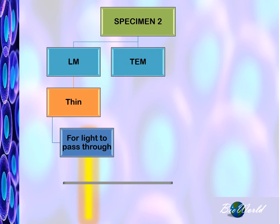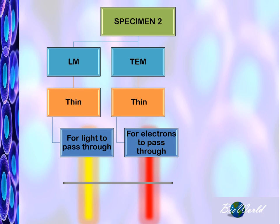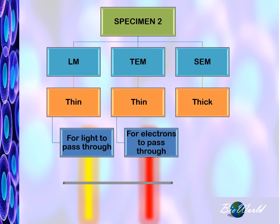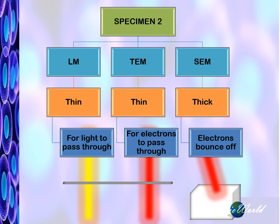For the transmission electron microscope, the specimen must also be thin — this time to enable the electrons to pass through. However, the scanning electron microscope can have thick specimens, since the electrons just have to bounce off the surface of the specimen.